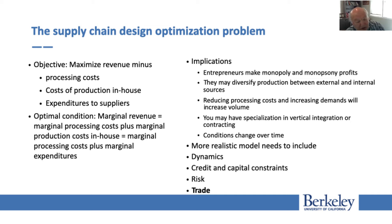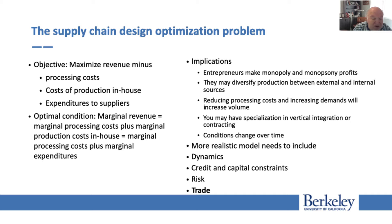A good model also has to account for the fact that you often have credit and capital constraints — limitations on how much you can build and how much you can borrow from the bank to invest. These constraints make it more difficult to develop an organization. There is also the constraint of risk: when you have risk, you may decide to hold some reserve or storage, or diversify feedstock production — some in-house and some bought from others.